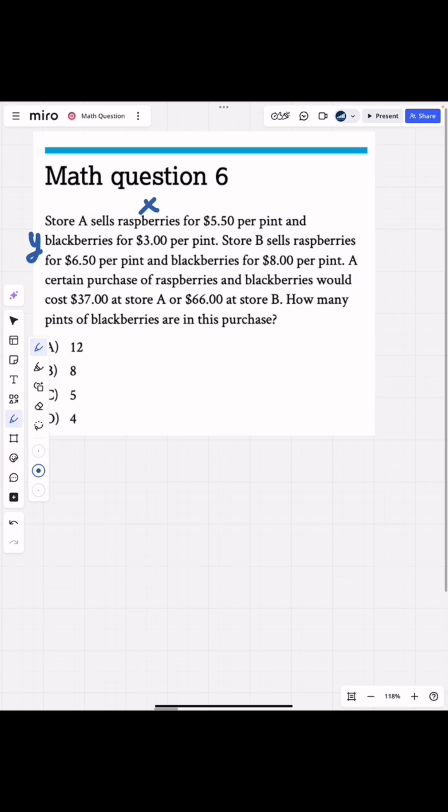So our first equation here is simply going to be 5.5x plus 3y, and that's going to be equal to 37 at store A.